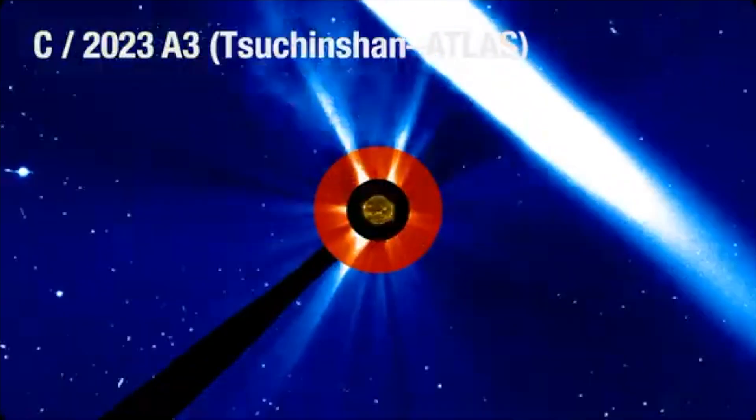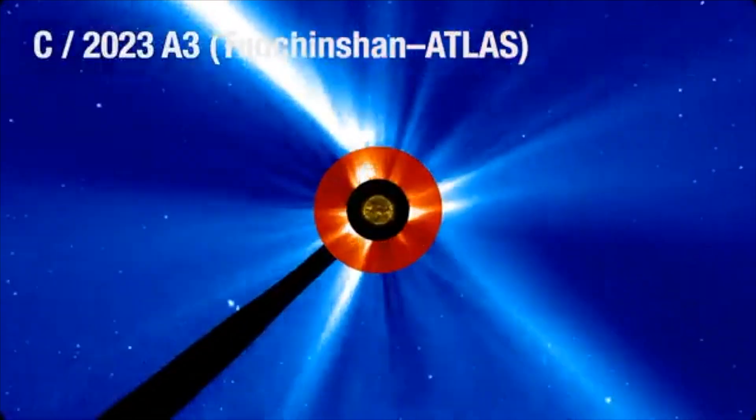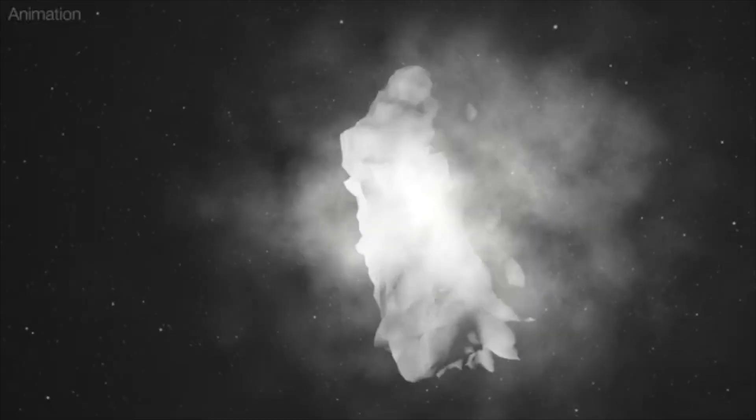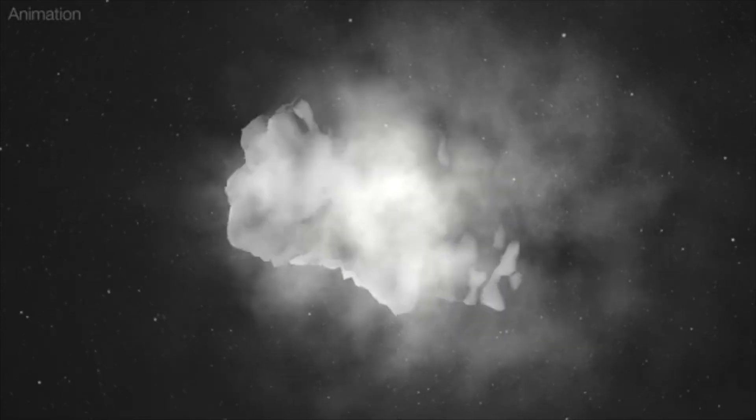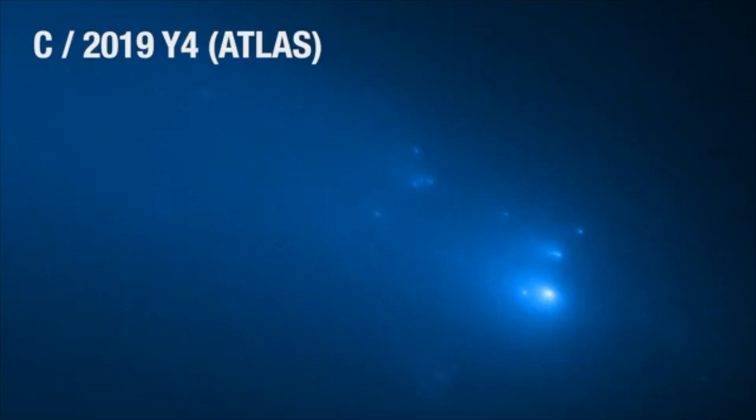Should it survive the perilous journey near the sun, the chances of 3I Atlas experiencing another close encounter with a star are incredibly remote. It's also possible that 3I Atlas, like many fragile comet nuclei approaching the sun, could break apart or disintegrate into dust, bringing its existence to an end.